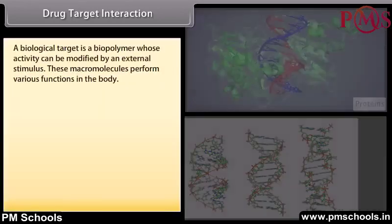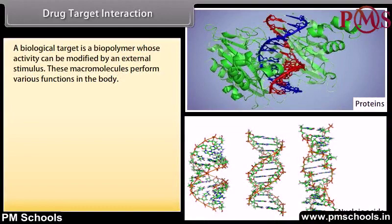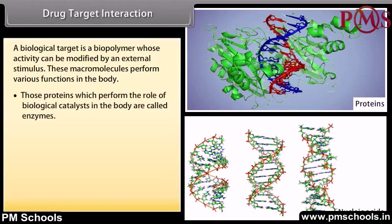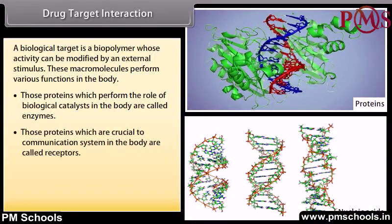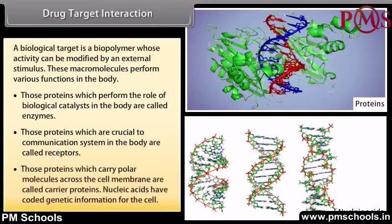Drug-target interaction: A biological target is a biopolymer whose activity can be modified by an external stimulus. These macromolecules perform various functions in the body. Those proteins which perform the role of biological catalysts in the body are called enzymes. Those proteins which are crucial to the communication system in the body are called receptors. Those proteins which carry polar molecules across the cell membrane are called carrier proteins. Nucleic acids have coded genetic information for the cell.